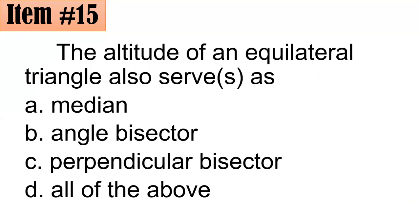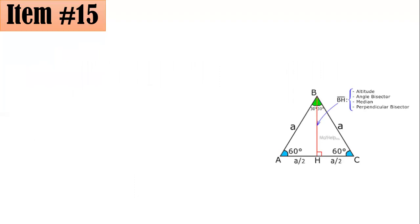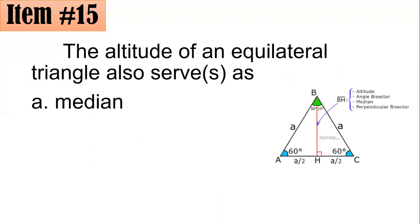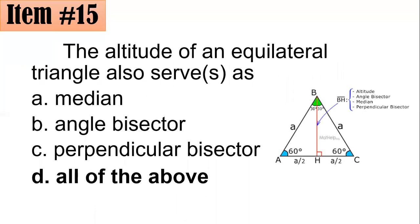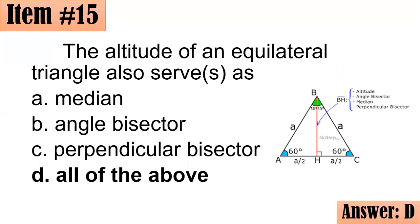The altitude or height of an equilateral triangle also serves as A, median, angle bisector, perpendicular bisector, or all of the above. What do you think? If you have this one, always remember this. That in an equilateral triangle, the altitude or the perpendicular height, it's like coffee, it's a 4 in 1.